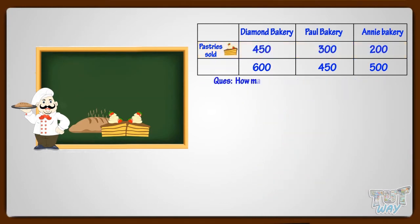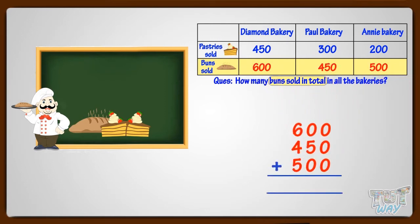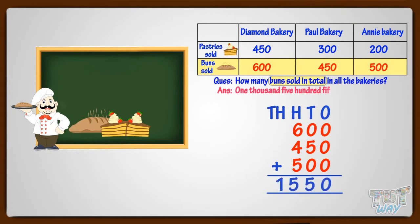How many buns were sold in total in all the bakeries? Let's answer the question. The question is to find out the total number of buns sold. So, add up all the buns sold from all the bakeries. First of all, write all numbers in order to add them — write each numeral below the mark of its place value. So, 1,550 buns were sold in total in all the bakeries.